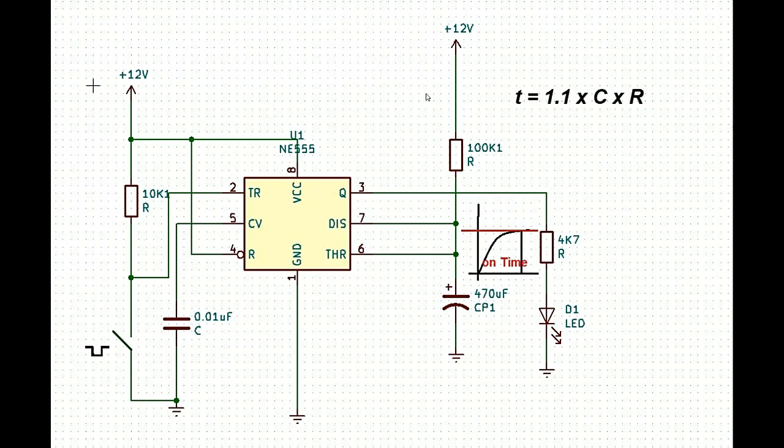This is the formula to calculate the time delay. It is 1.1 into C, the capacitor which is charging here, and resistor R which is helping to charge.